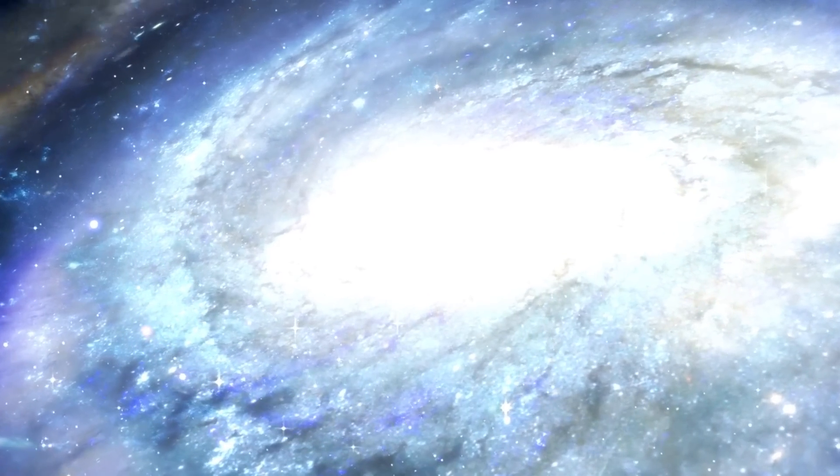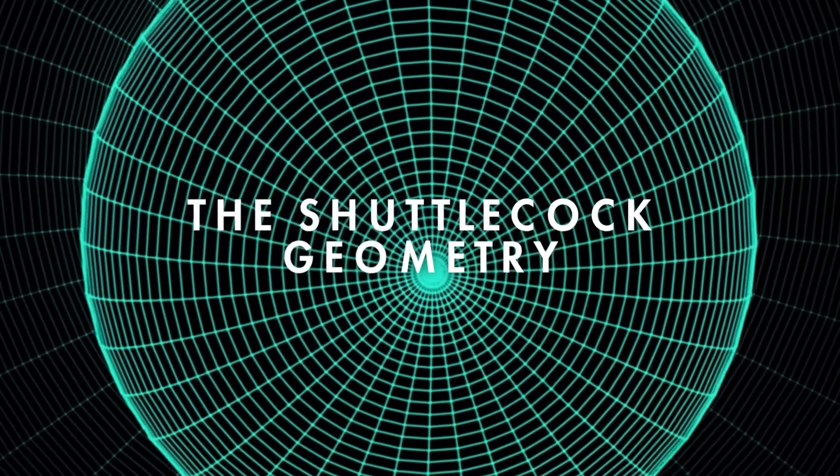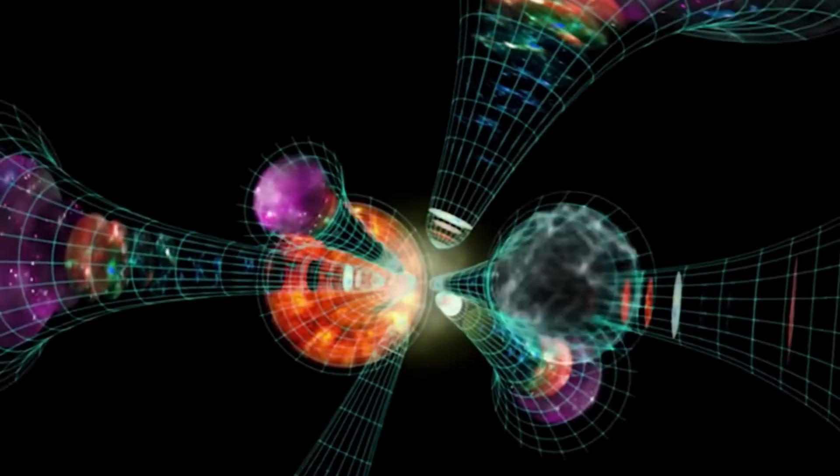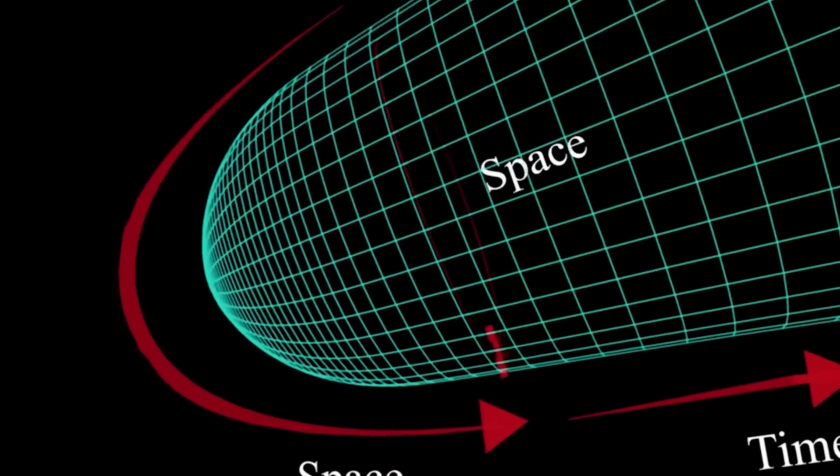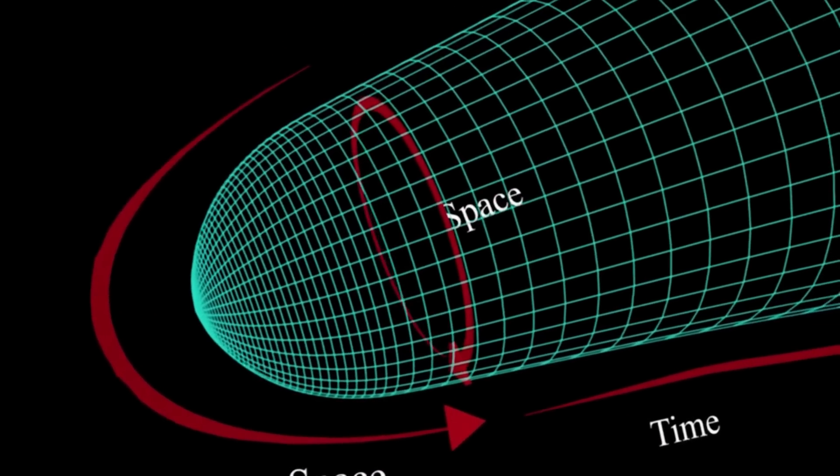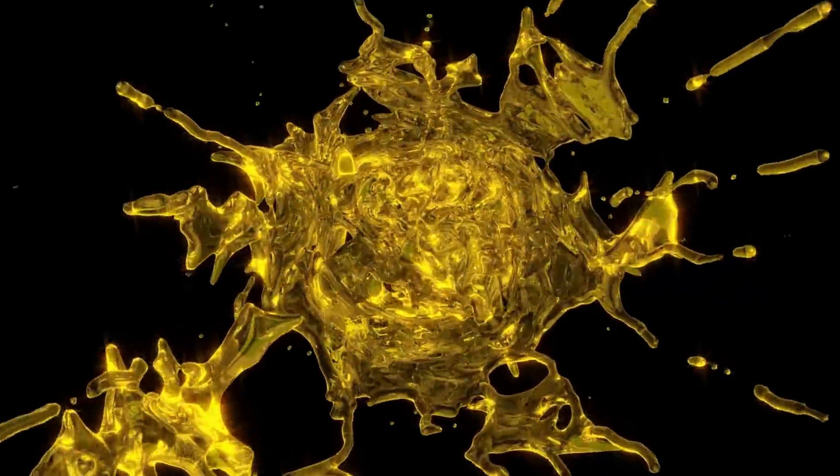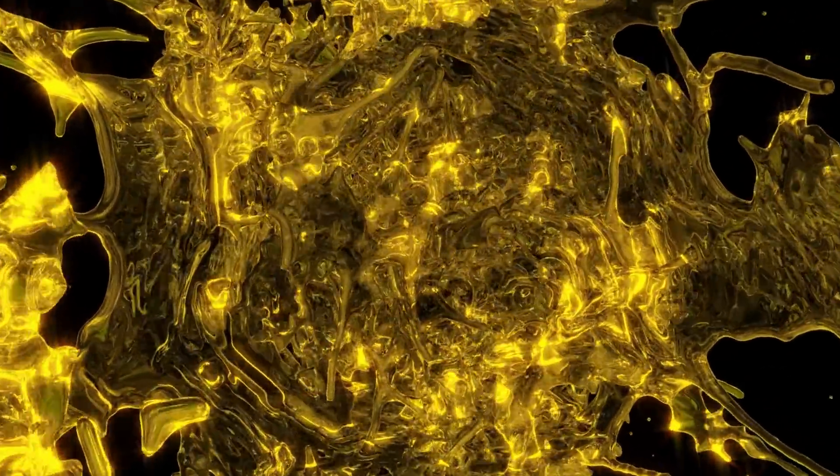Hawking and Hartle's shuttlecock universe begins as pure space, not dynamical space-time as we traditionally think of it. This idea stems from the No Boundary proposal, where the universe doesn't start with a bang but silently and smoothly from a single point. This point of origin in their model is pure space.